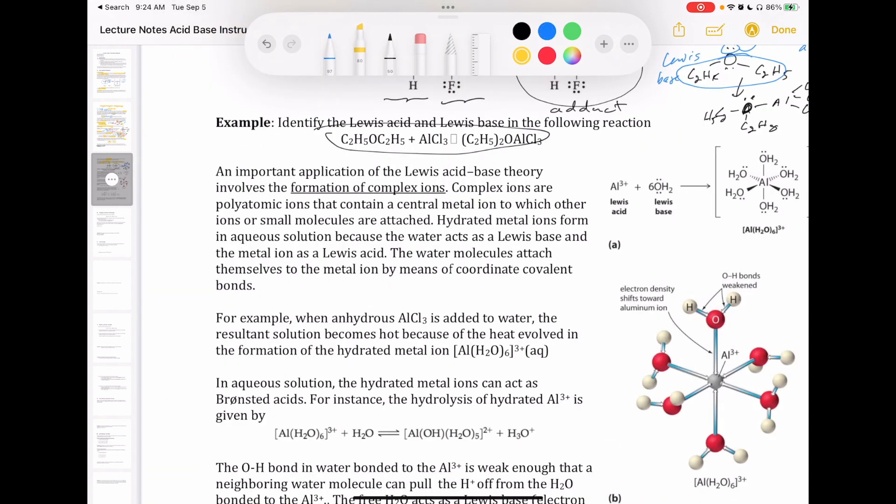The main importance of the idea of Lewis acid and base in this class is in understanding the formation of complex ions. We will have a later chapter where we will talk specifically about complex ions, but we'll kind of touch on it here and there. This is the first introduction to complex ions. These are just polyatomic ions that contain a central metal ion. And then you have other small molecules or ions that are attached to that metal ion in the center. A hydrated metal ion would be an example of a complex ion.